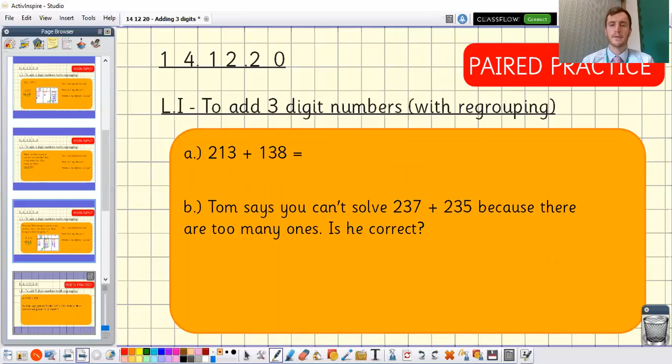Let's move on. For your practice I've got two questions I'd like you to have a go at. The first one 213 plus 138. We know we're adding because the symbol there tells that. The second one's a bit of a problem-solving one. Tom says you can't solve 237 plus 235 because there are too many ones. I can see what he means. There's seven ones plus five ones. That's going to be more than ten. I wonder if we still could solve it. What do you think? Maybe have a go yourself. As always if you'd like to pause it here please feel free to do so and we'll come back together and go through those in a moment's time.